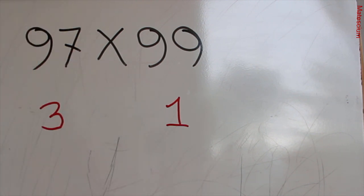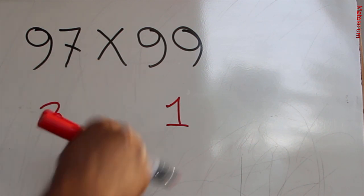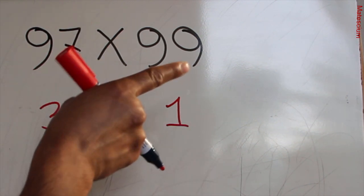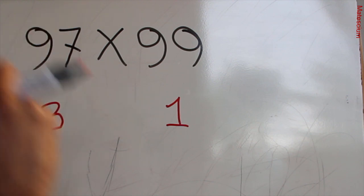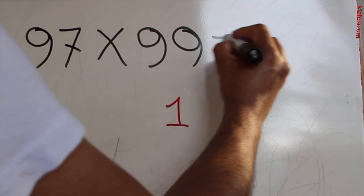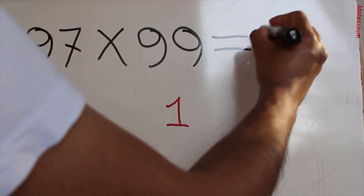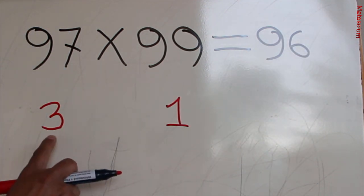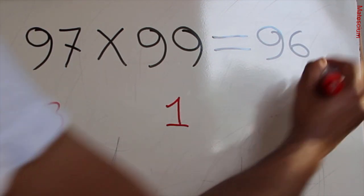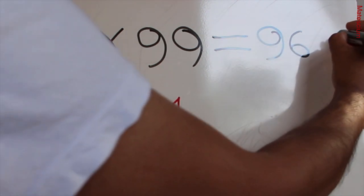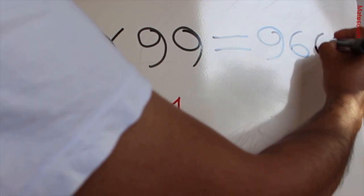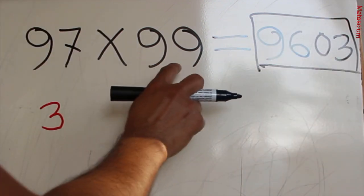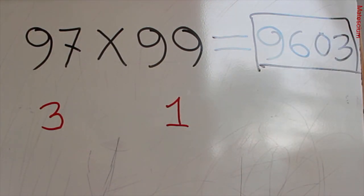So we need 96 to make it 100, because 4 plus 96 is 100. Write 96 here. Then multiply 3 times 1, which is 3. Write that here with a zero — so the answer of 97 times 99 is 9603.